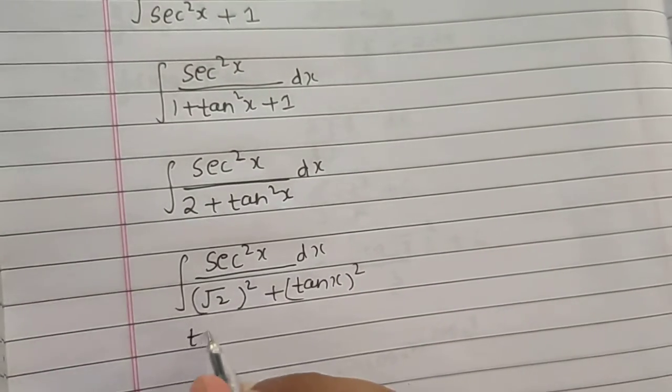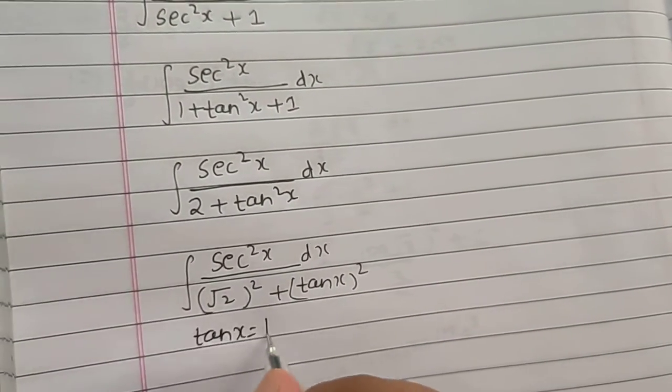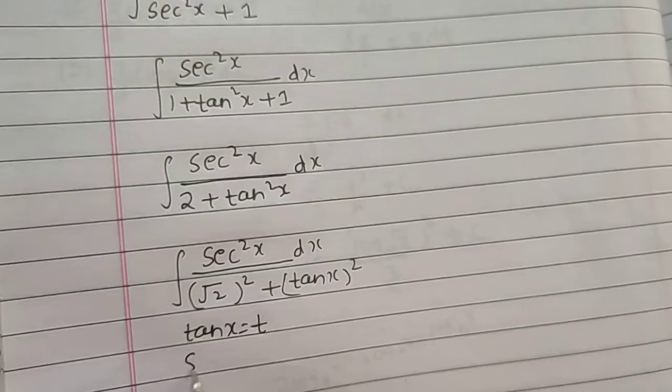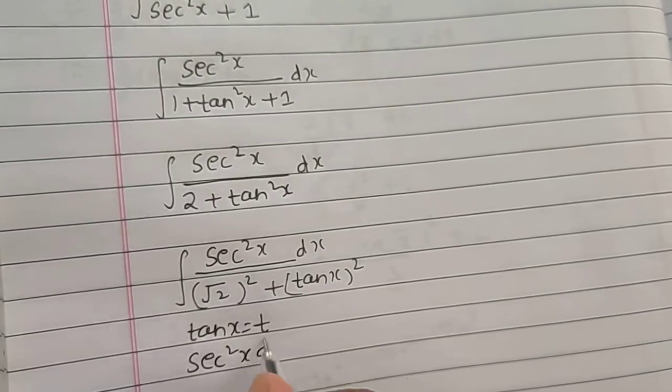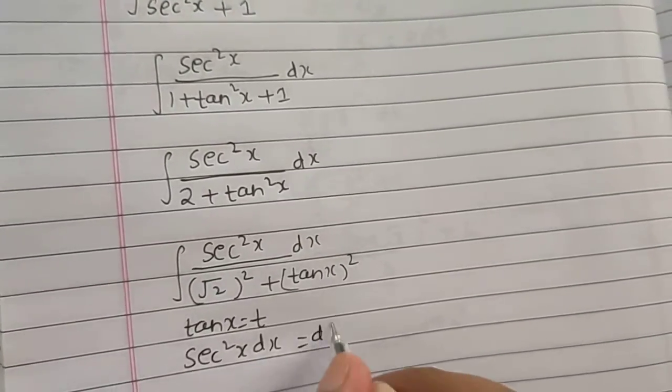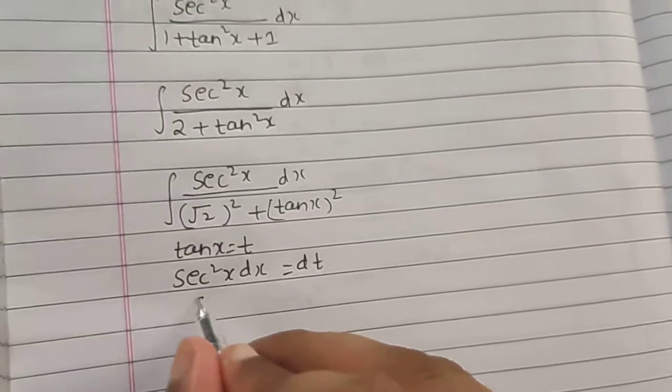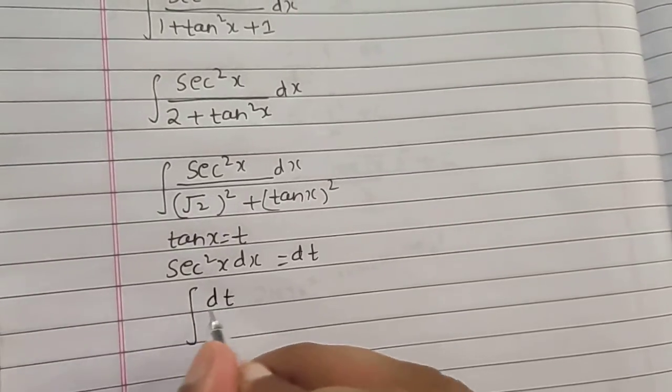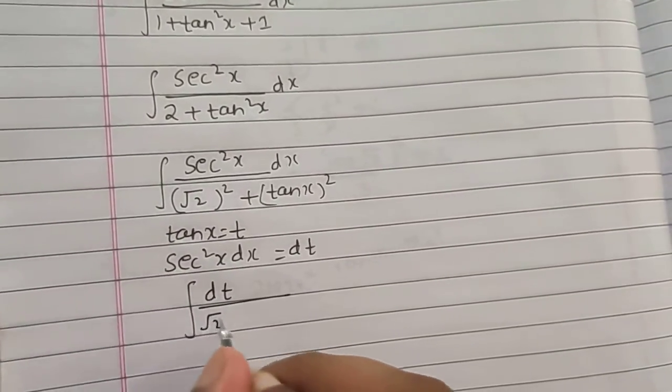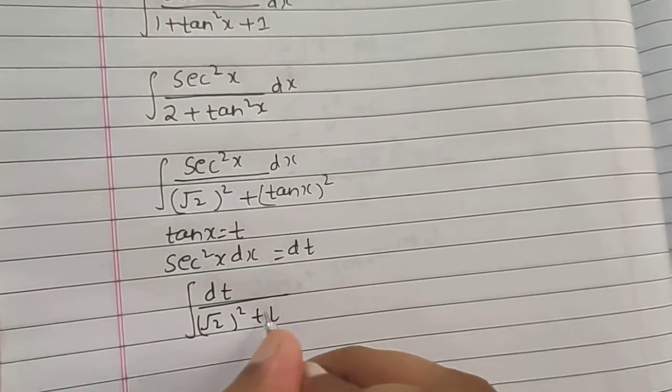Now I can take tan x as t to get sec²x dx as dt on differentiation. So my numerator entirely becomes dt, and in my denominator I have (√2)² + t².